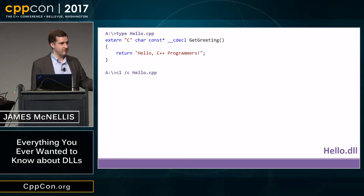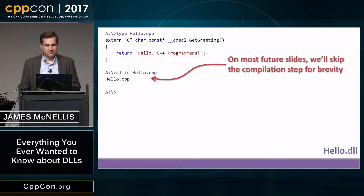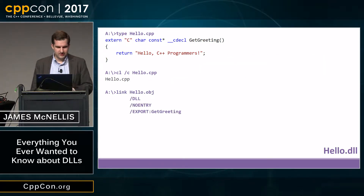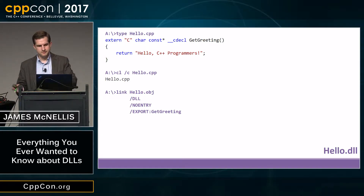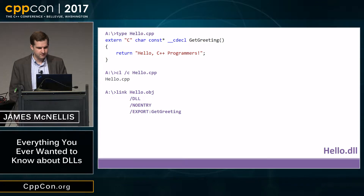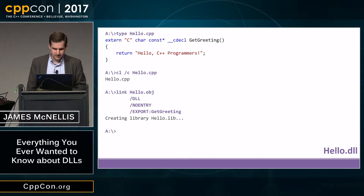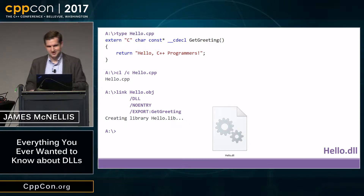We compile it with 'cl /c', which compiles without linking, producing hello.obj. Then to produce the DLL, we take hello.obj, pass the /DLL option to the linker — which tells it to build a DLL instead of an EXE — we say /NOENTRY to keep the example simple, and we use /EXPORT to tell it that get_greeting is part of the public interface. If we run that, it says it created hello.lib — we'll talk about that in a bit — and it also created hello.dll. Now, we can't just run the DLL, so we need to write a program that actually uses it.